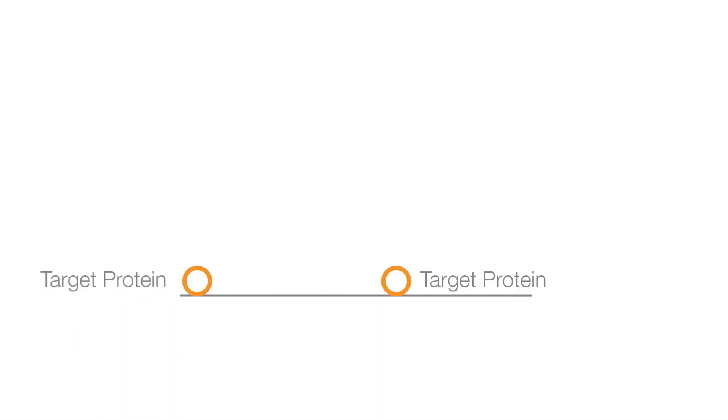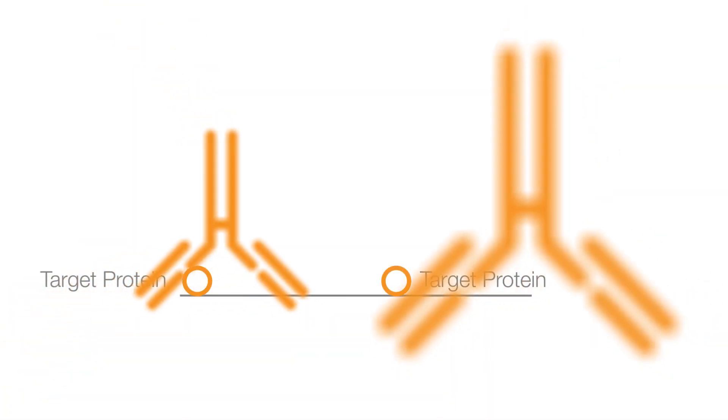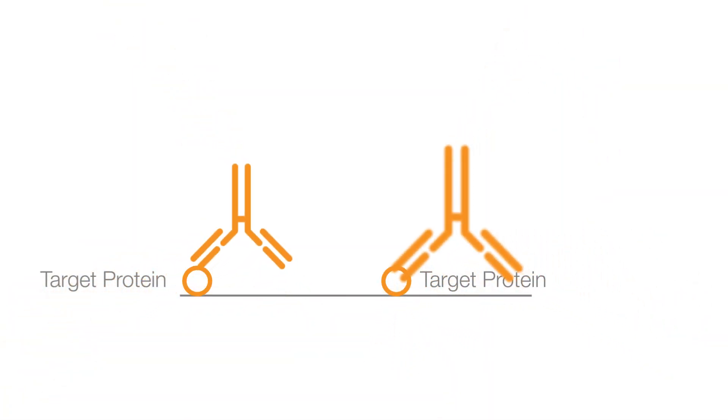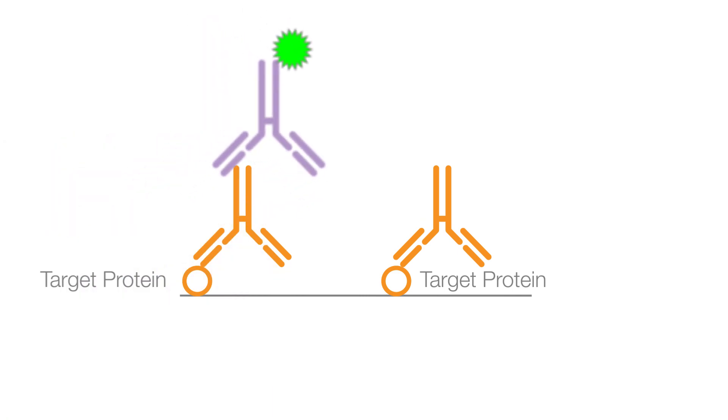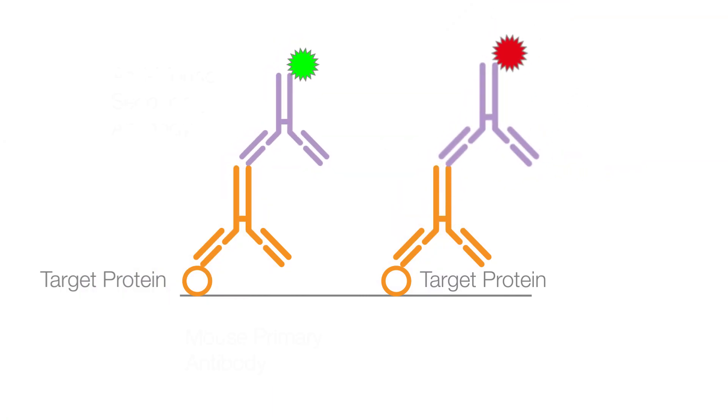Multiplex western blotting requires careful choice of unconjugated primary antibodies in combination with selected secondary antibodies. In this video, we discuss the selection of the primary antibodies. Secondary antibody selection is covered in a separate video.